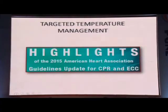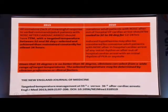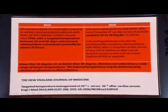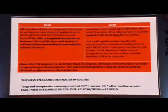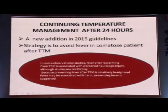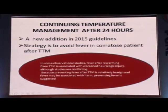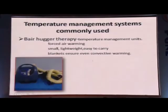Targeted temperature management per AHA guidelines for CPR: all comatose adult patients — defined as lacking meaningful response to verbal commands — with ROSC should have TTM, with a targeted temperature between 32 to 36 degrees. The emphasis is more on prevention of hyperthermia rather than excessive cooling, and this should be maintained for at least 24 hours. Whether to continue after 24 hours is your choice, but the 2015 guidelines recommend at least avoiding hyperthermia, because even during the recovery phase, hyperthermia is significantly detrimental to cerebral recovery and quality of life.